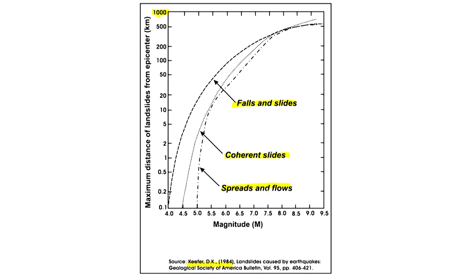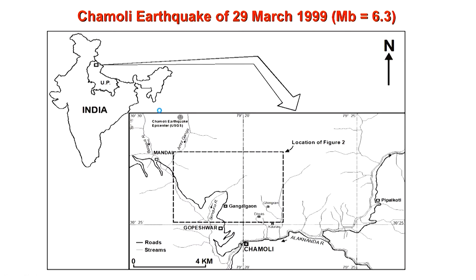As we move to higher magnitudes, different kinds of landslides — like rock falls, slides, coherent slides, spreads, and flows — can all occur depending on the distance from the epicenter. When we go much farther away, like 1000 kilometers, we do not see any effect. But near say 10 kilometers, even a 5.5 magnitude earthquake can bring landslides. This gives a perspective view of the relationship between magnitude and distance from the epicenter related to landslides.